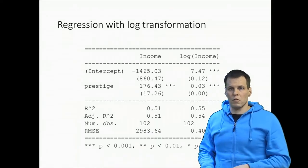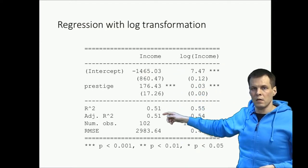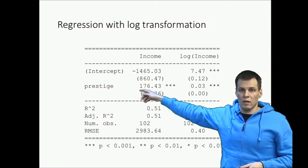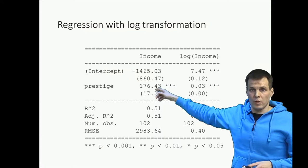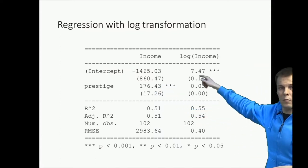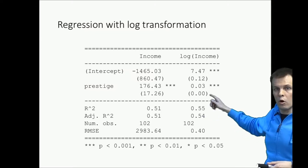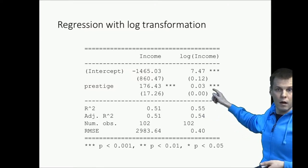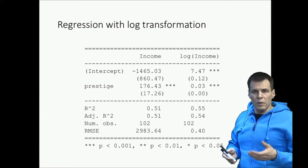Let's take a log transformation of income and run a regression analysis. So here's my regression analysis. This is the income done with R using this data. We can see that one unit increase in Prestige leads to 176 Canadian dollars more per year. And then when we have log of income, then log of income increases by 0.03 for every additional unit of Prestige.